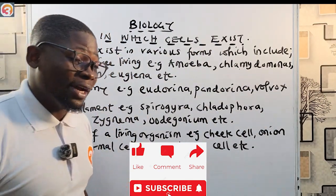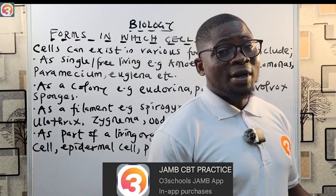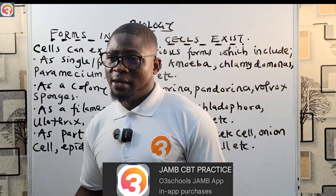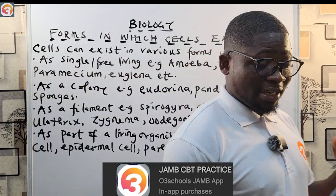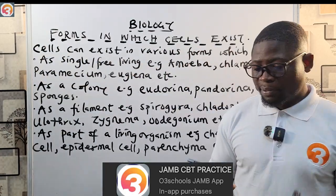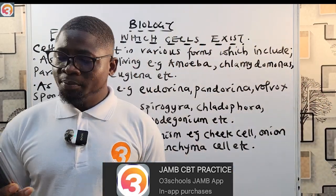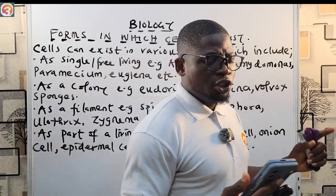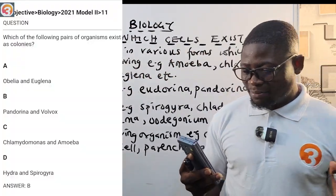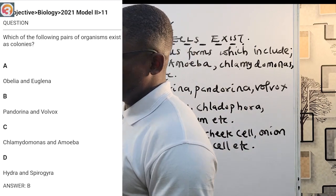This tutorial is brought to you by the one and only O3 School Jump app — it's all you need to succeed in your exam. I'll talk about the app later, but for now let's begin with this class. Before we begin, let's take a question from the app: this is a 2020/21 question number 11, which asks which of the following pairs of organisms exist as colonies.